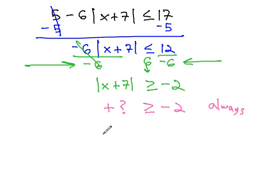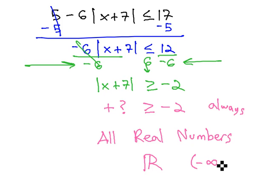This statement is always true. Because the absolute value is always greater than a negative number, this inequality that we started with at the beginning is always true as well. We say the solution is all real numbers. Or if you would like to use the notation for all real numbers, a fat capital R, or in interval notation from negative infinity to infinity.